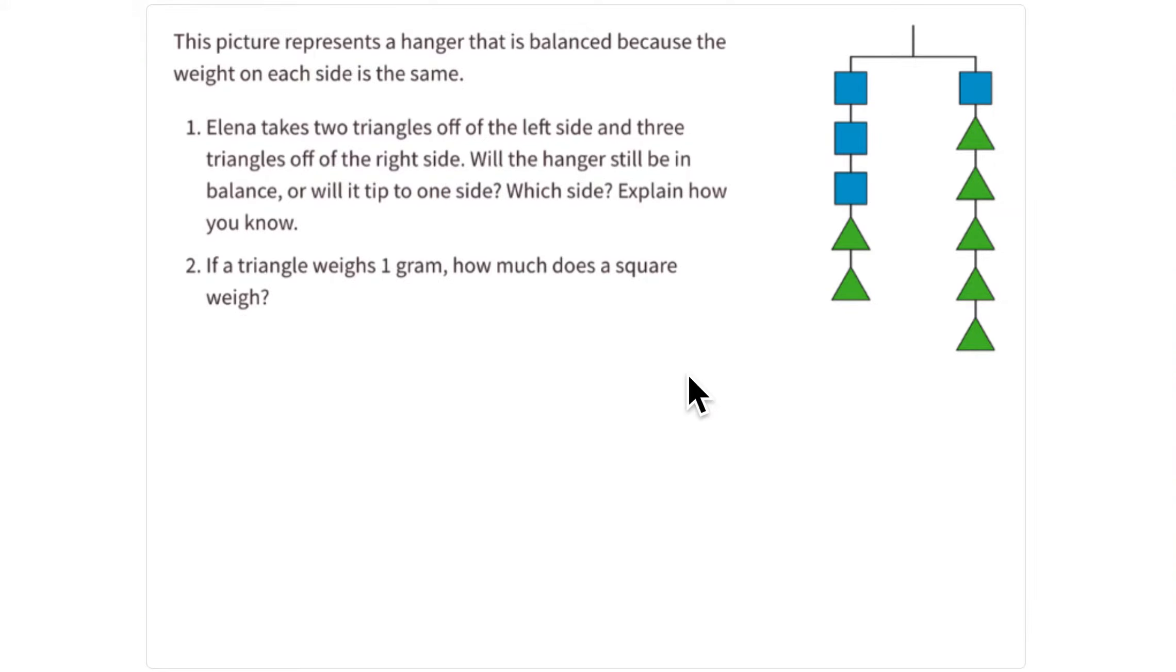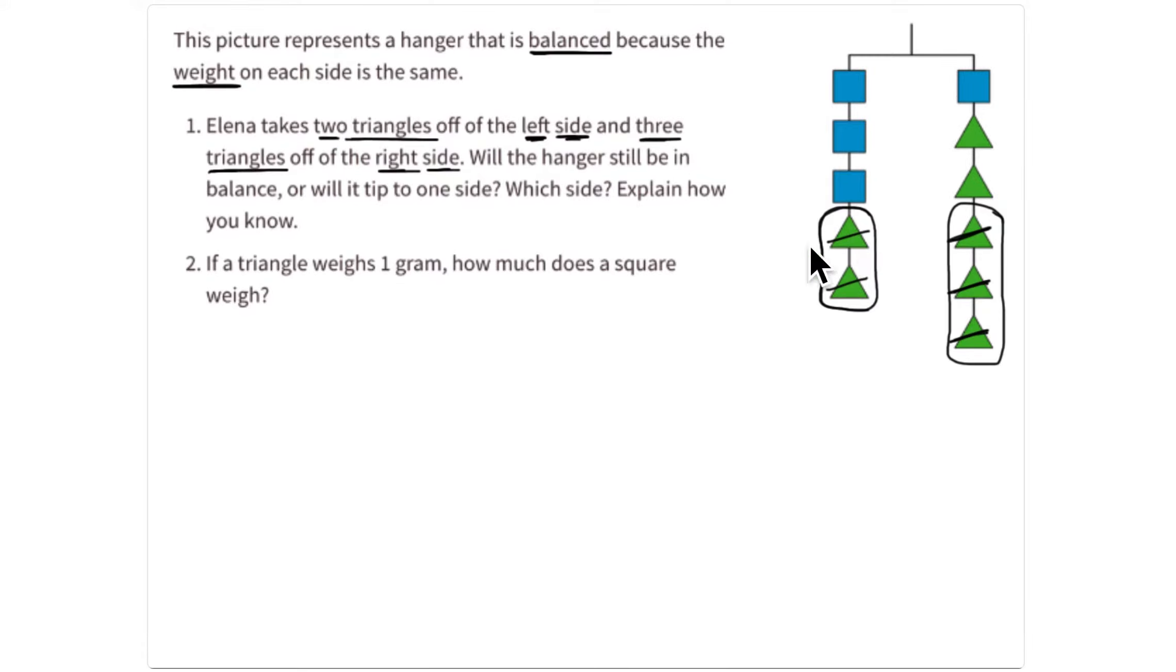So in the first part of this activity, Elena has these two sets of triangles and blocks hanging from this hanger. And the question is, if she removes two triangles from the left side and three triangles from the right side, will these hanging blocks still be in balance?